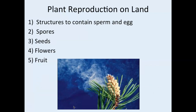Plant reproduction on land requires structures to contain egg and sperm because the land is dry, hot, and deadly to exposed cells. There are things called spores, seeds, flowers, and fruit — we'll talk about all of these in just a minute.